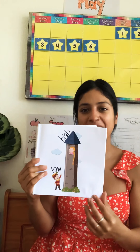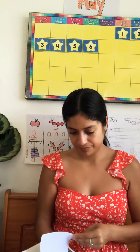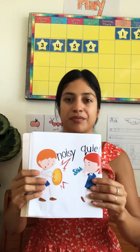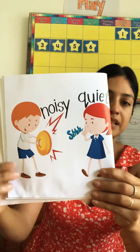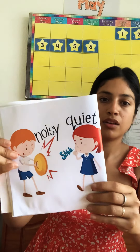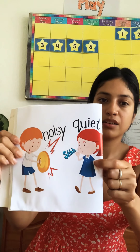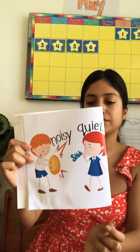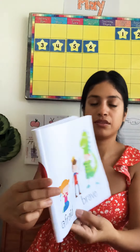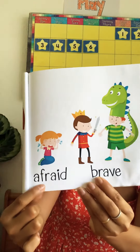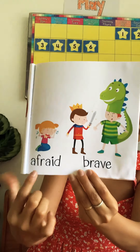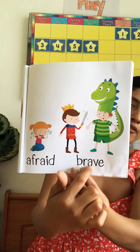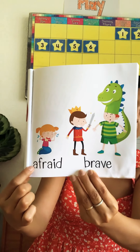These are opposites. Noisy. Quiet. Quiet. Noisy. Opposites. Afraid. And brave. Brave. Afraid.